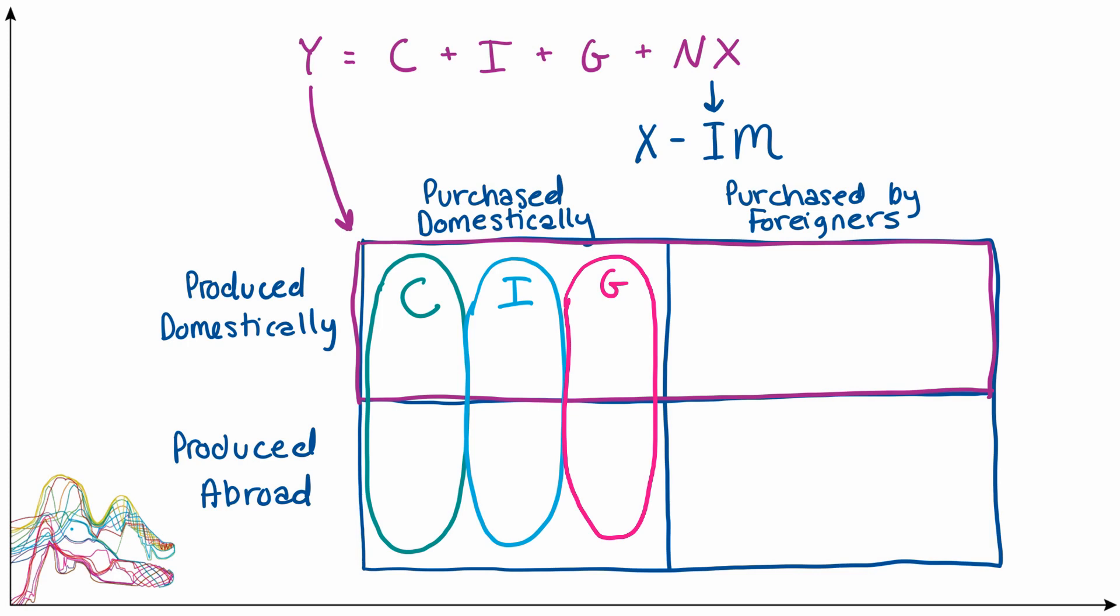Exports, by definition, are things that are produced domestically but purchased by people in other economies. So that one's pretty simple that we can just put exports solely in this box on the upper right here.